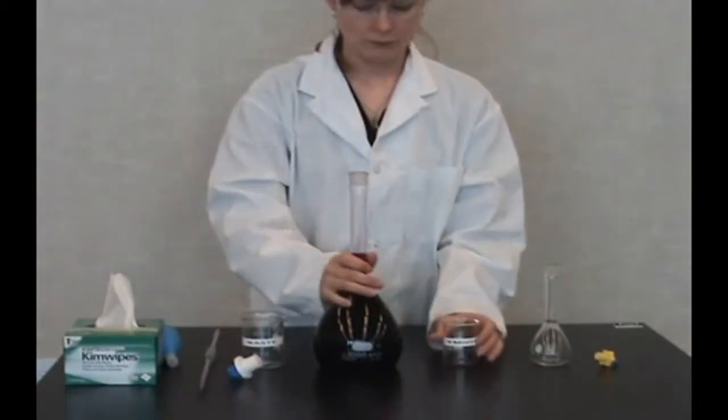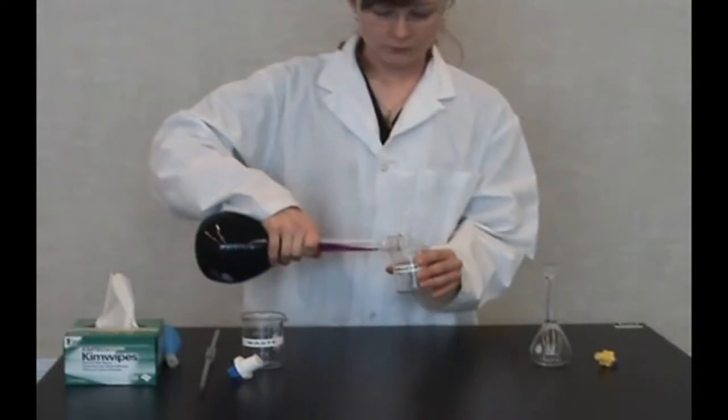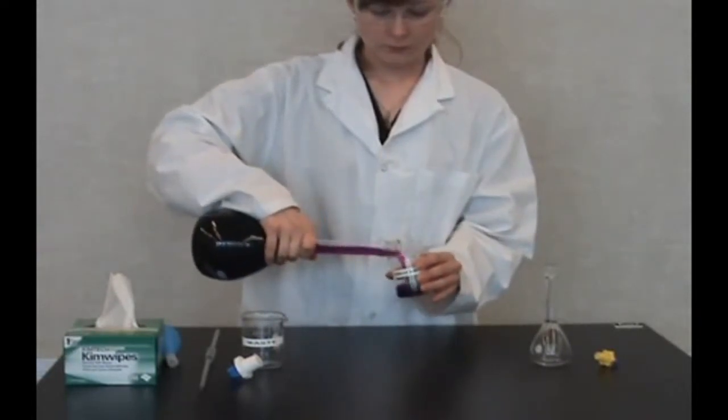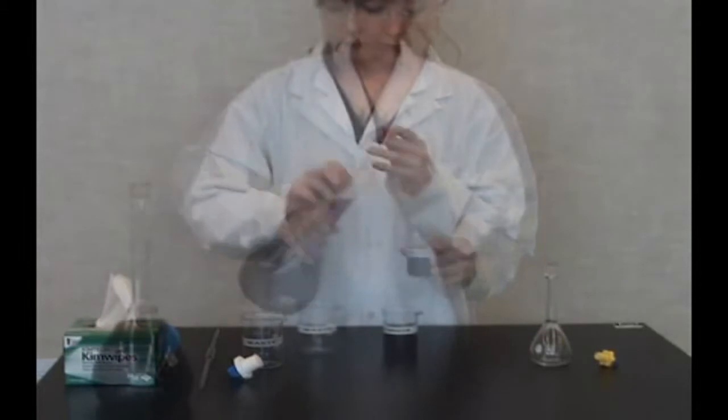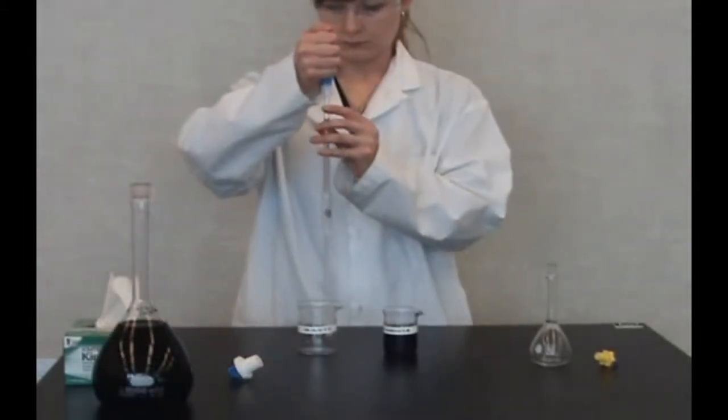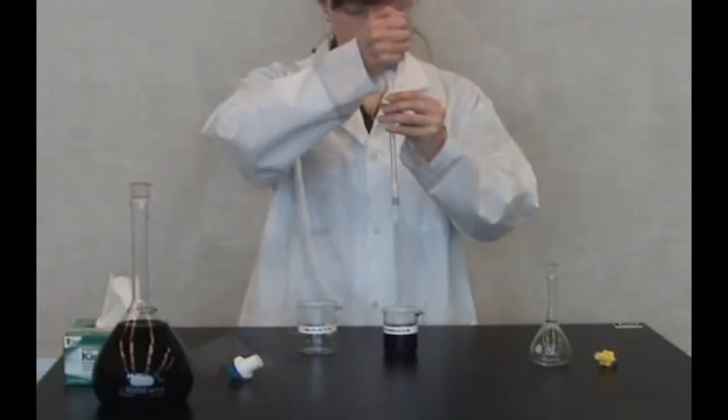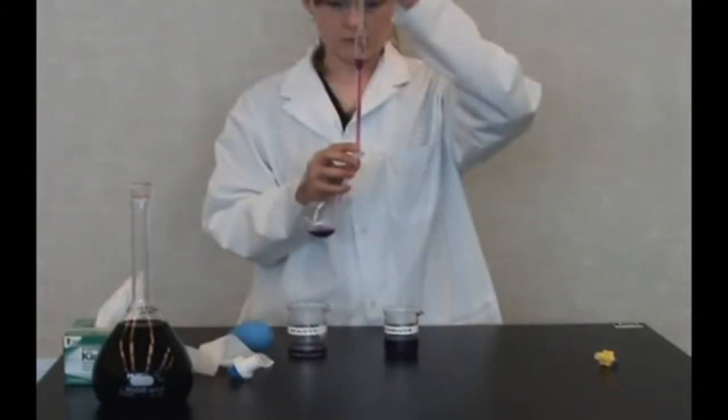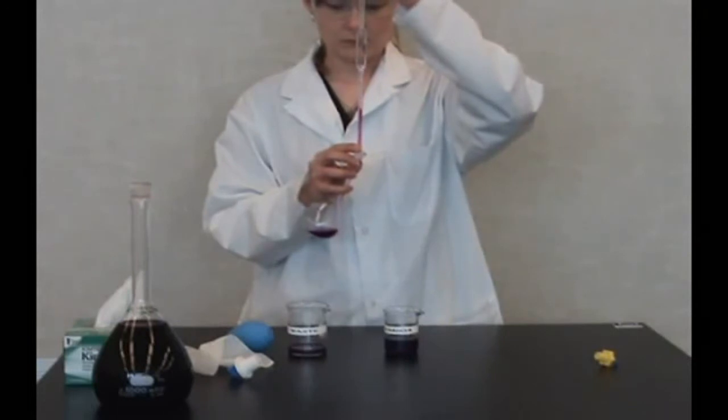Remove the stopper and pour some solution into a beaker. Take a 10 ml pipette and deliver the aliquot of solution into a 100 ml volumetric flask. For further instructions, review the pipette technique video.